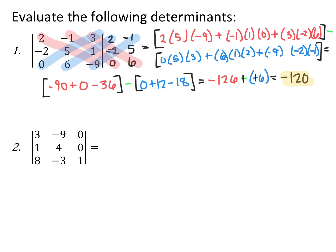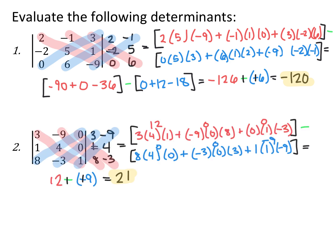Go ahead and pause the video and find the determinant of the next matrix. Multiplying down from the upper left: 3 times 4 times 1 is 12, negative 9 times 0 times 8 is 0, and 0 times 1 times negative 3 is 0, so we get positive 12 for the down diagonals. Starting in the bottom left, multiplying up: 8 times 4 times 0 is 0, negative 3 times 0 times 3 is 0, and 1 times 1 times negative 9 is negative 9, so we get negative 9 for the up diagonals. Therefore 12 minus negative 9 gives positive 21.